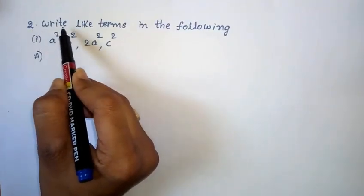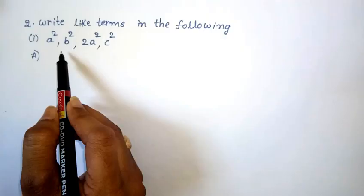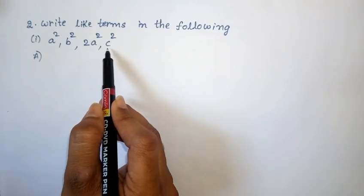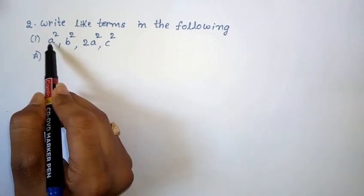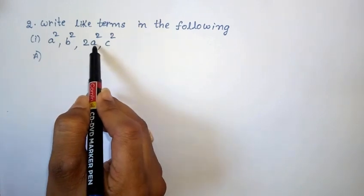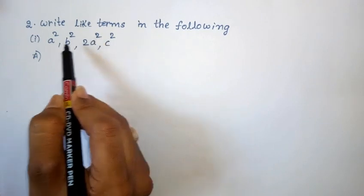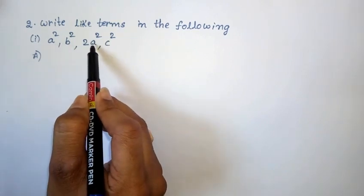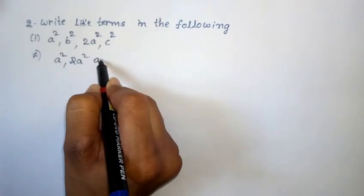Next, 2nd Roman: write the like terms in the following. 2nd Roman, 1st one: a squared, b squared, 2a squared, c squared. In these four terms, find the like terms — like terms meaning same variables with equal exponents. The first term a squared and third term 2a squared both have variable a with exponent 2. So a squared and 2a squared are like terms.